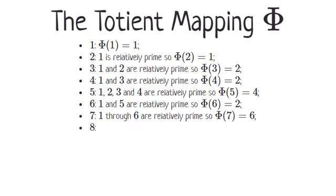Emi, can you calculate Phi of eight? There are four numbers less than eight which are relatively prime to it: one, three, five, and seven, and so Phi of eight equals four. A perfect analysis. Thank you.